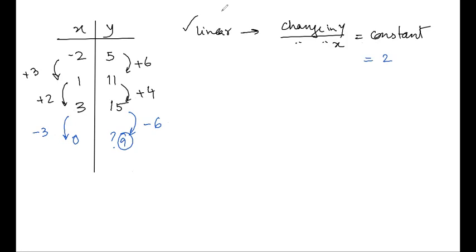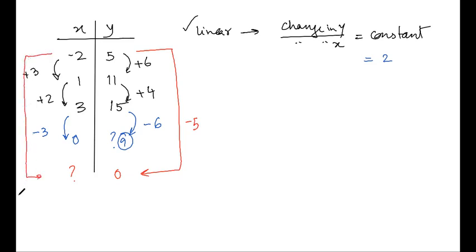Similarly, if we want to find x when y equals 0, we start from the point where y is 5 at x equal to −2. The y value has reduced by 5, so the change in x should be −2.5 (half the change in y, since the ratio is 2). So x equals −2 minus 2.5, giving negative 4.5.